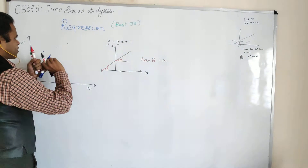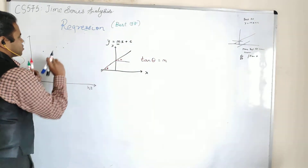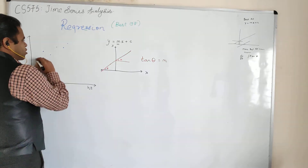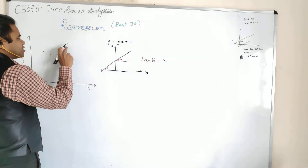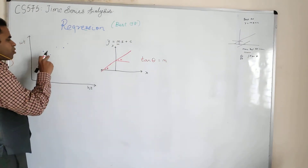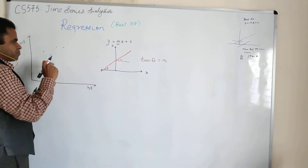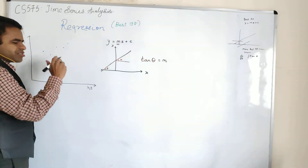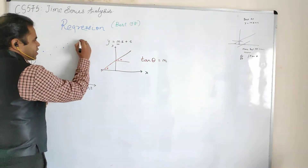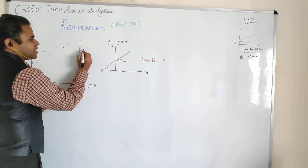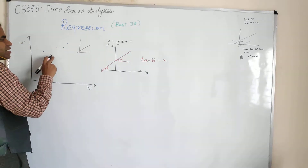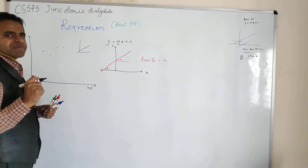Line of regression basically says: draw a line that covers the maximum points placed here. Now if you can see, the points are placed in a random fashion, so you cannot have a single straight line that covers all the points. Had your data been perfectly aligned, then surely you could place a single line there. But since the data is a bit distributed, you cannot have a straight line.